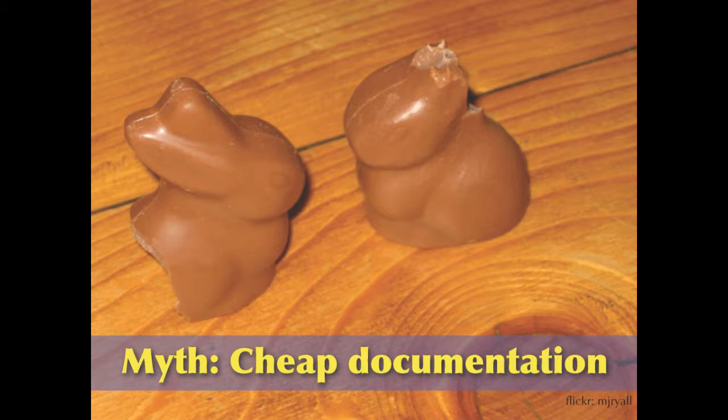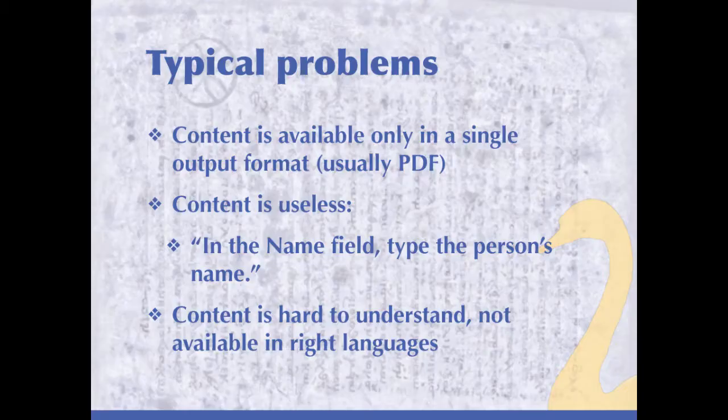Typical problems with cheap documentation: it's hard to understand, badly formatted, badly written, badly organized. It provides the wrong output type — maybe your end users don't want PDF, maybe they want HTML, maybe they want something on a mobile app, or maybe they need print because they work in an environment where they don't get computer access. Information is not made available in the right languages. If your audience is largely Spanish-speaking and you're providing information only in English, you've got issues. But these are content quality problems, not business problems.